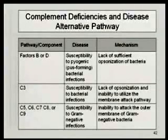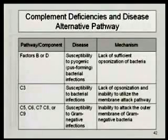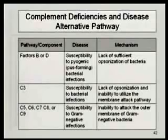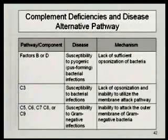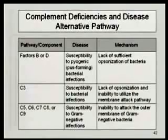As for the alternative pathway, there are defects in factors B or D, and these patients become more susceptible to pus-forming bacterial infections, because the particles are not being opsonized sufficiently and are not cleared as rapidly by phagocytic cells. C3 deficiency is a very serious deficiency — they're susceptible to most bacterial infections, because particles are not getting opsonized properly. Without C3, the lytic pathway is also non-functional, and you can't opsonize these particles at all.